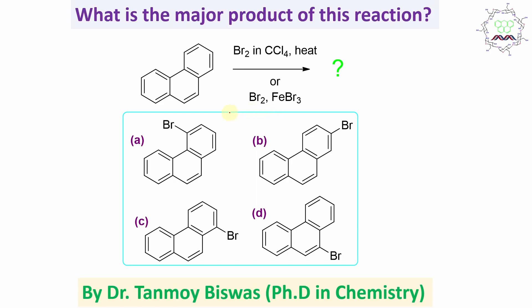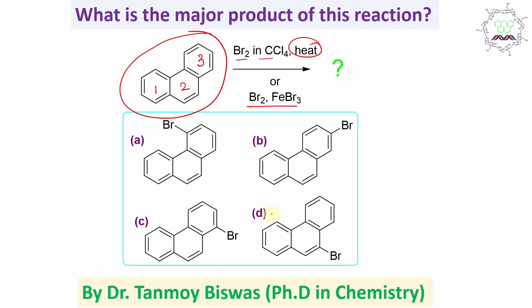Now if you look at this reaction, it involves a polycyclic aromatic hydrocarbon where three benzene rings are fused together. It reacts with either bromine in carbon tetrachloride with heat, or bromine with FeBr3 — both result in the same product. You have to find out what the product is. In all cases, bromine is attached, so this is aromatic electrophilic substitution. For this bromination, some Lewis acid is needed.